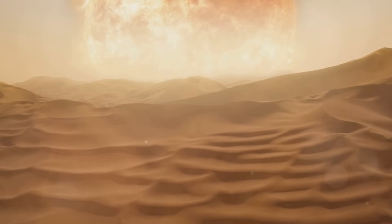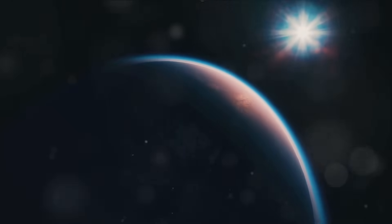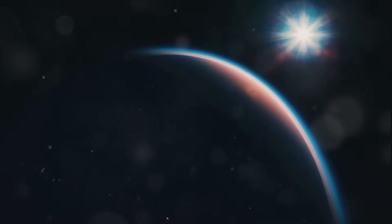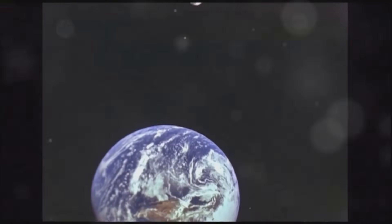But the heat isn't the only thing you'd have to worry about. Venus's atmosphere is so dense that it creates a pressure at the surface more than 92 times that of Earth. To put that into perspective, it's like being a kilometer deep in Earth's oceans. Not exactly a vacation spot, is it?